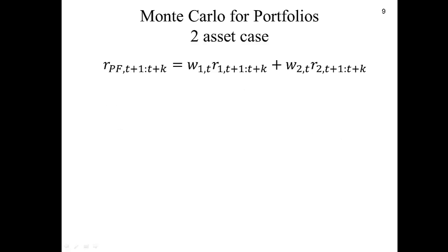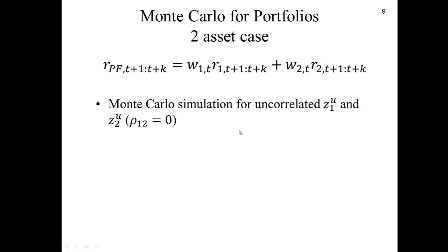For Monte Carlo with portfolios, we start with a portfolio that has two securities — security 1 and security 2. Security 1 has weight w1 and security 2 has weight w2, so the portfolio return is the sum of the weighted returns. If we assume z1 and z2 are uncorrelated, we generate r1 and r2 independently — say 1,000 scenarios — weight them, and obtain the portfolio return.